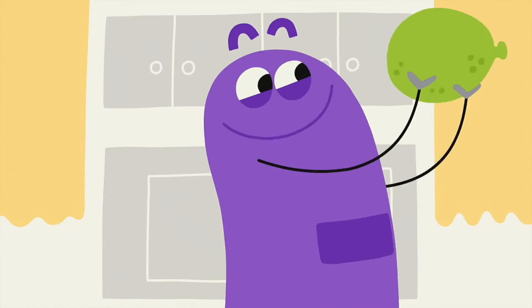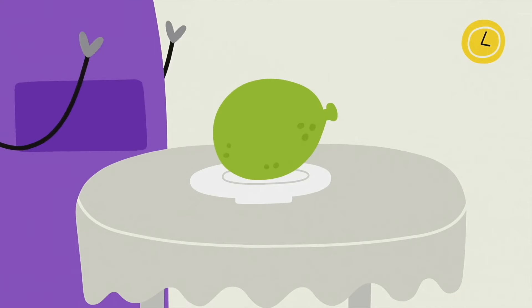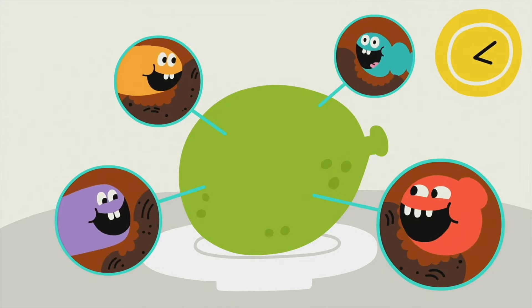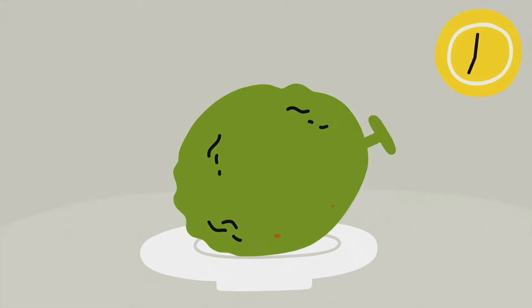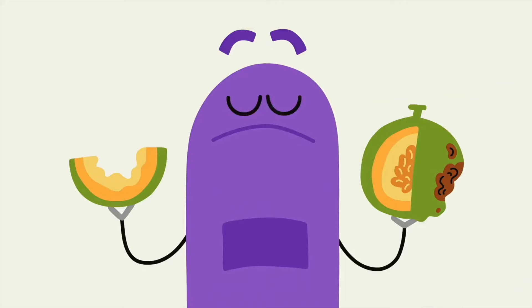When a ripe and juicy melon looks delicious to you, a zillion tiny creatures want a piece of it too. So if you put it out and leave it sitting day after day, they'll just keep snacking till it's rotting away.